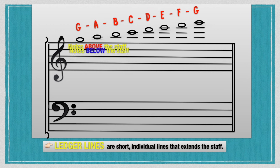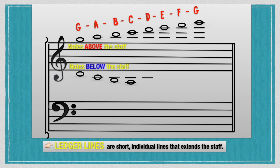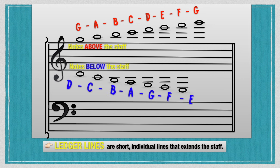Let's recognize the notes below the treble clef staff. Below the staff is D. The first ledger line below is C. On the space below the first ledger line is B. On the second ledger line below is A. On the space below the second ledger line is G. On the third ledger line below is F, and on the space below the third ledger line is E. So below the treble clef staff: D, C, B, A, G, F, and E.